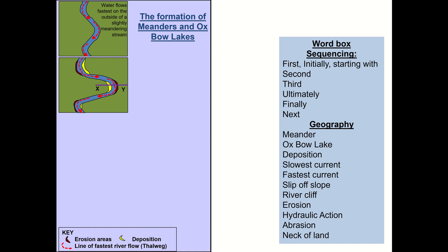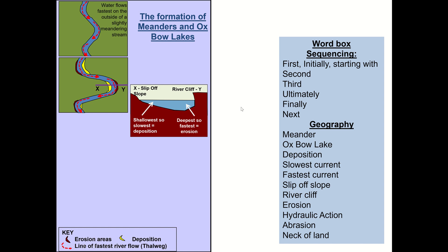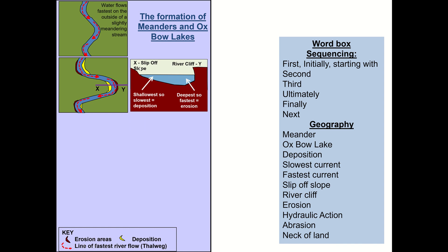On the inside of the bend, you can see the yellow areas — those are the areas of deposition. Going from X to Y on the cross section, at X it's shallowest, so there's more friction acting on the water at that point. That slows the water down and encourages deposition of those beaches. At Y it's deeper, so there's less friction — that's where we get our river cliff because of erosion.